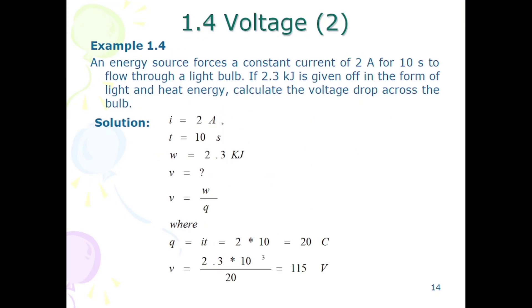We have an example on topic voltage. An energy source applies a constant current of 2 amperes for 10 seconds to flow through a light bulb. If 2.3 kJ of energy is given off in the form of light and heat energy, calculate the voltage drop.